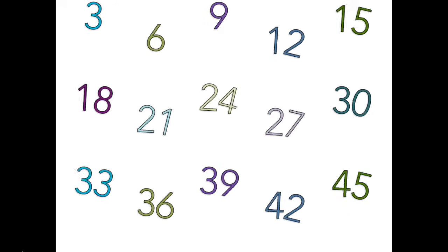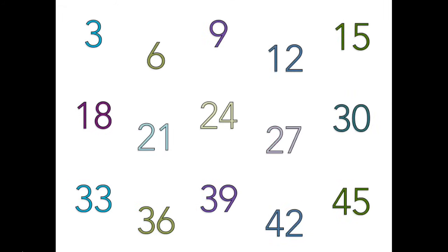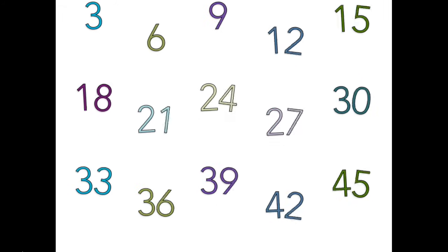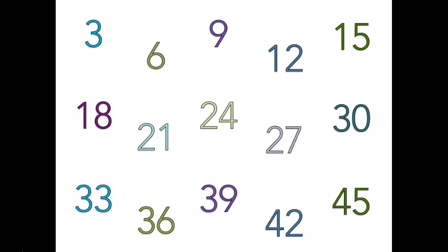27, 30, 33, 36, 39, 42, 45. That is how we count by threes. We love to count by threes.